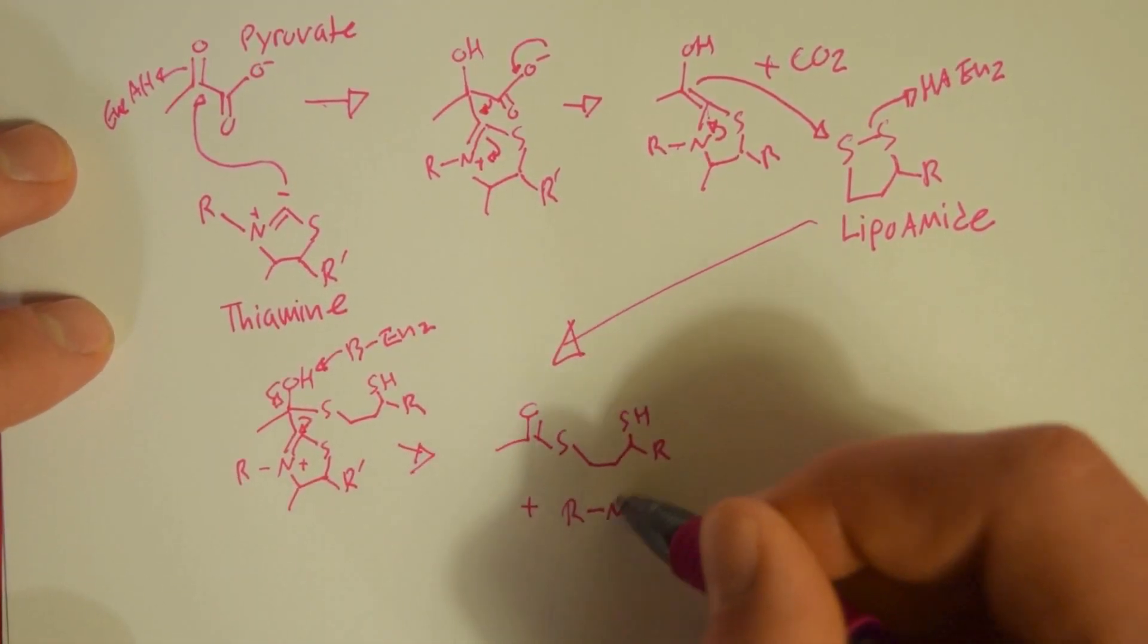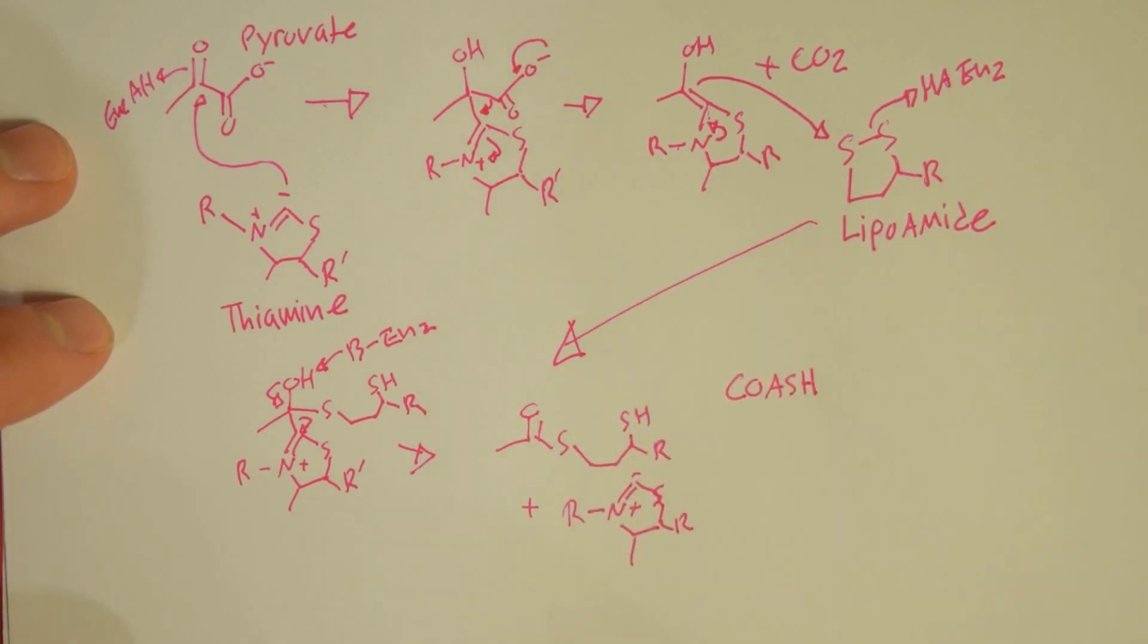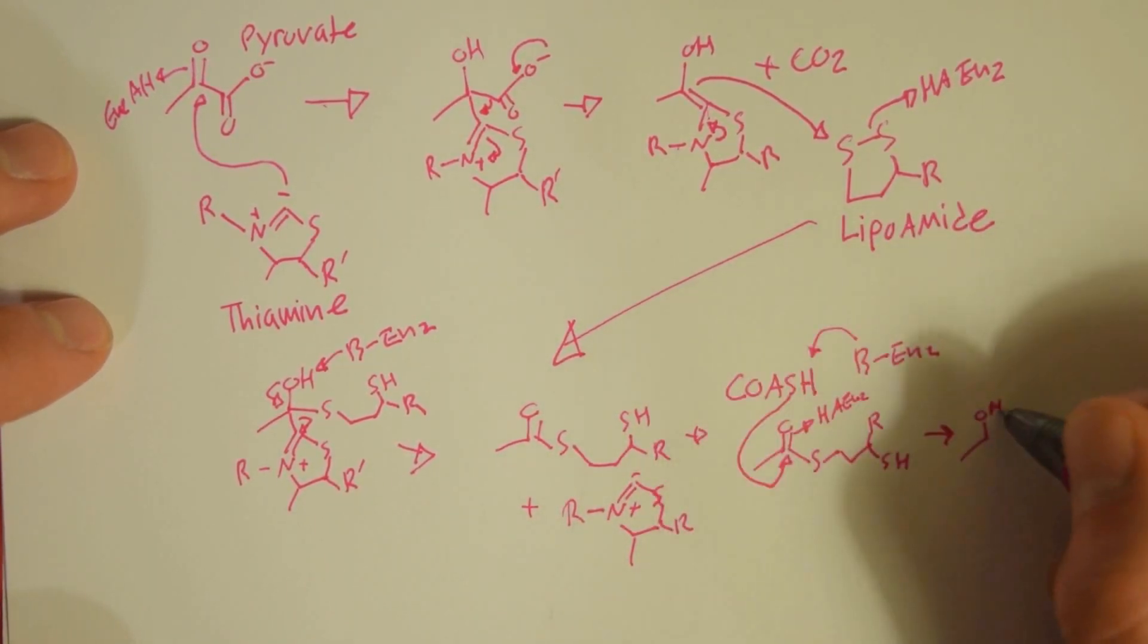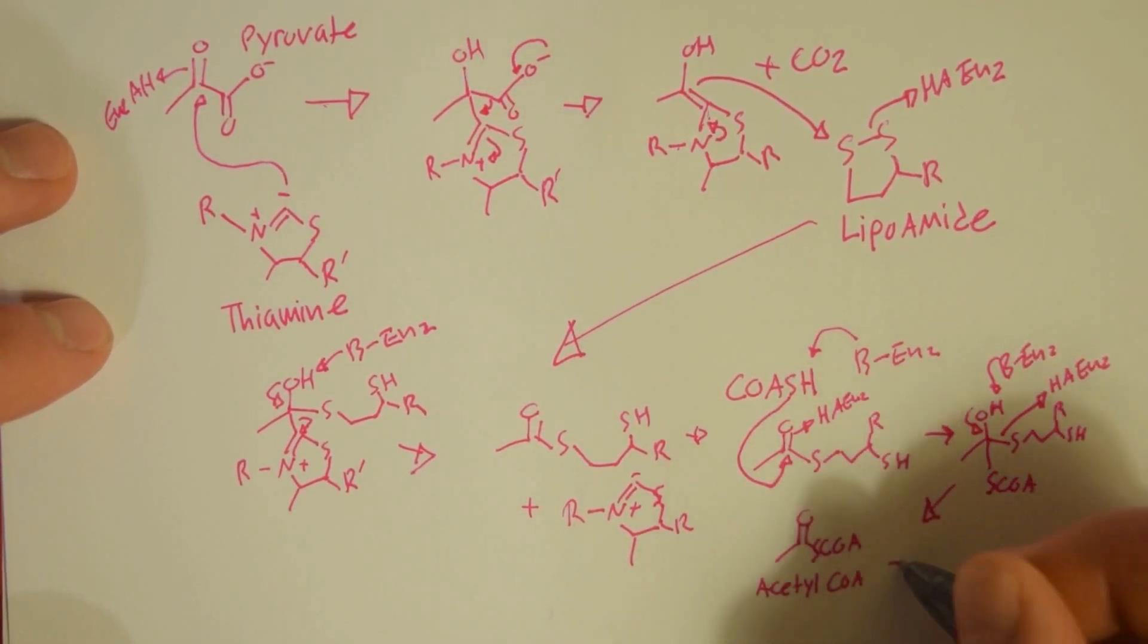Then CoA, which is part of acetyl CoA, attacks the ketone, forms another tetrahedral intermediate, and the lipoamide gets kicked off, and we have acetyl CoA.